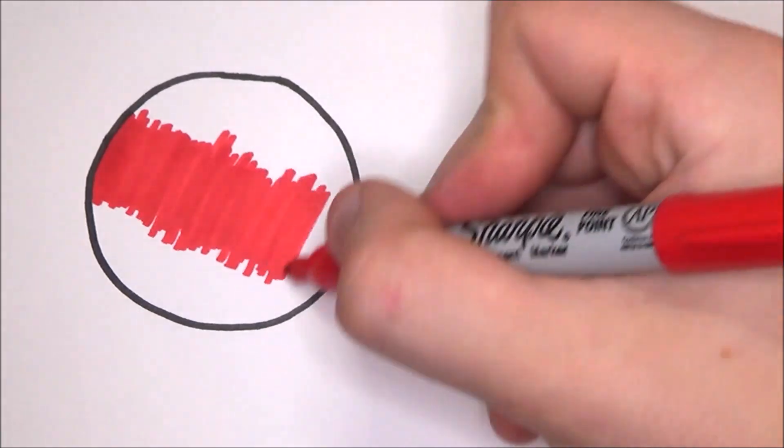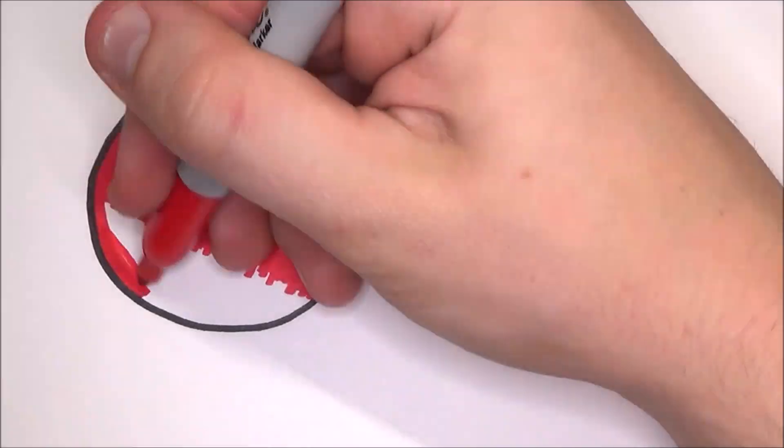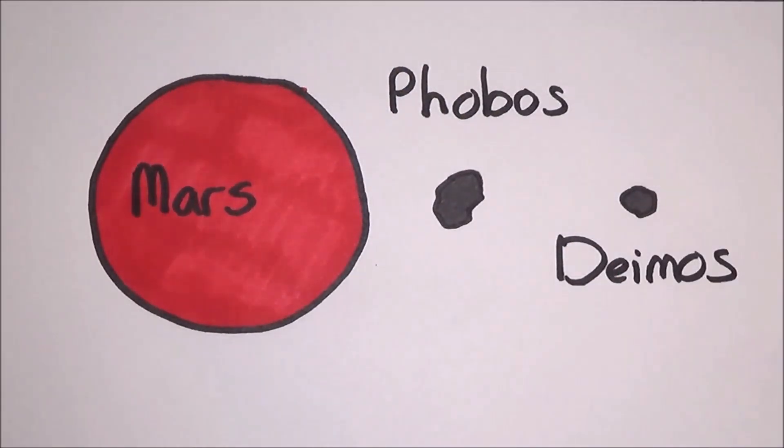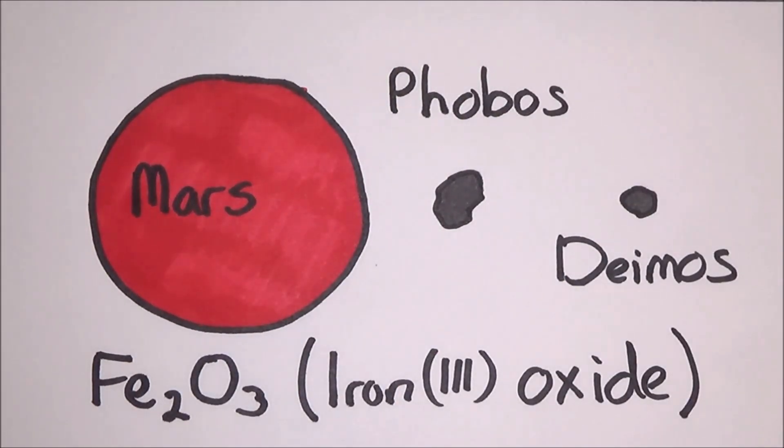Fact number 4 is that Mars' surface is red due to a compound called iron oxide. You're actually really familiar with this compound. On Earth, we call it rust. So Mars is literally a rusty planet.